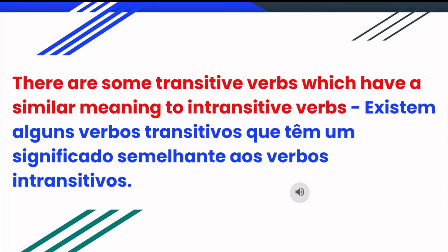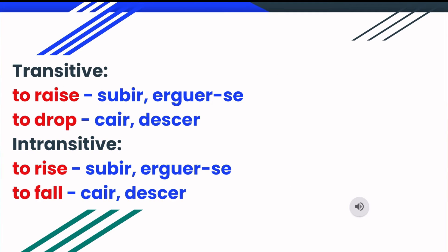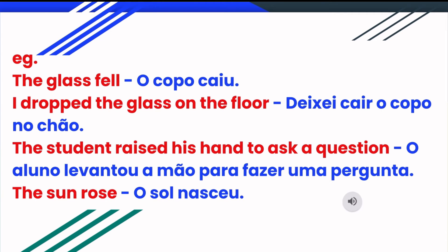There are some transitive verbs which have a similar meaning to intransitive verbs. Transitive: to raise, to drop. Intransitive: to rise, to fall. Example: the glass fell. I dropped the glass on the floor. The student raised his hand to ask a question. The sun rose.